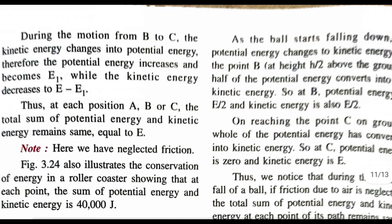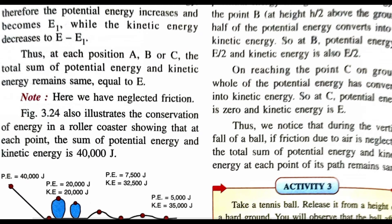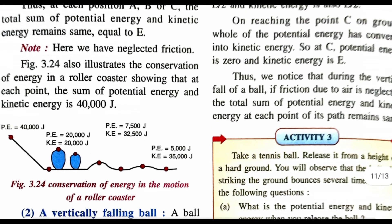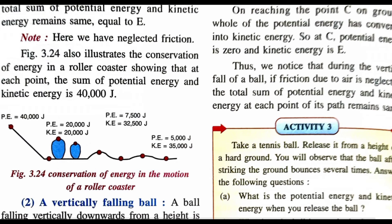During the motion from B to C, kinetic energy is converted back to potential energy and potential energy increases. At each position A, B, and C, the total sum of potential energy and kinetic energy remains the same. Figure 3.24 also illustrates the conservation of energy in the roller coaster, showing that at each point the sum of potential energy and kinetic energy is 40,000 J. The total energy remains 40,000 J throughout — starting as all potential energy, then split equally, then shifting toward kinetic energy.